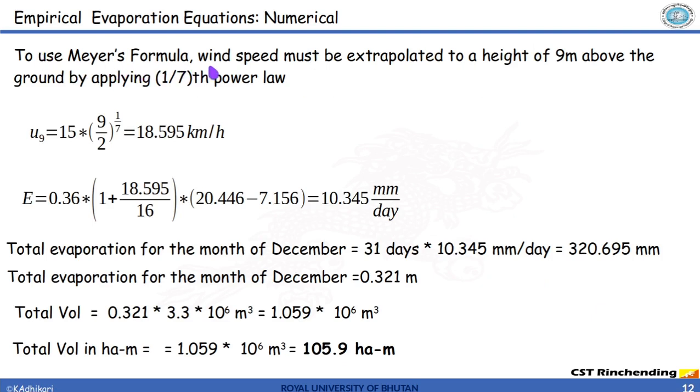To use Mayer's formula, wind speed must be extrapolated to a height of 9 meter because we know that in Mayer's formula we use the velocity at 9 meter whereas in the Rohwer's formula the velocity is considered at 0.6 meter above the ground surface. And we have also discussed the formula how to extrapolate. From here we get the velocity of air at 9 meter height which is equal to 18.595 kilometer per hour.